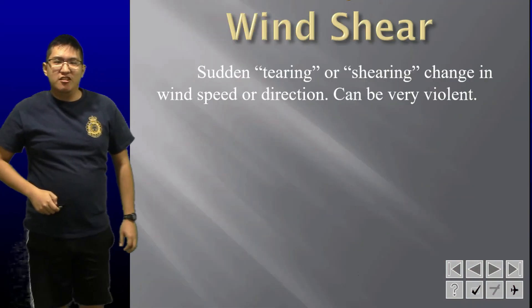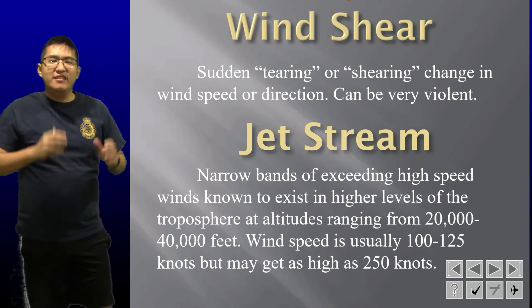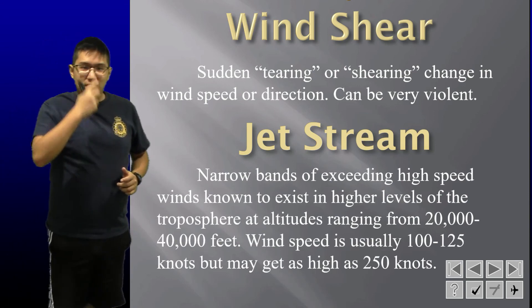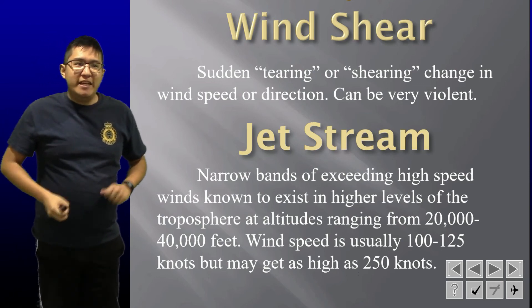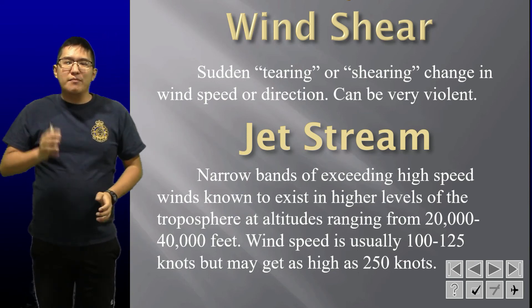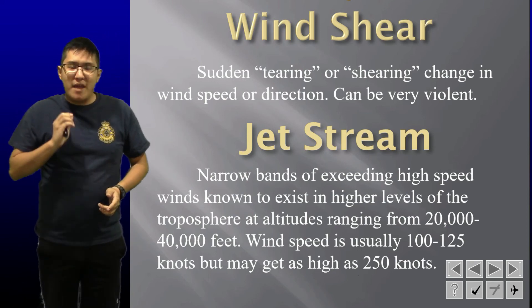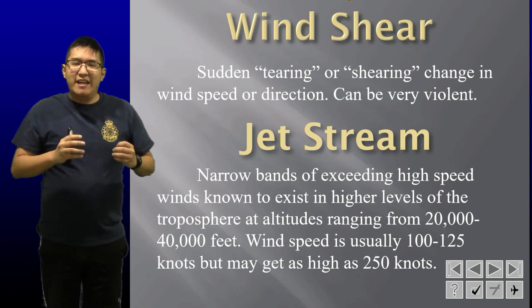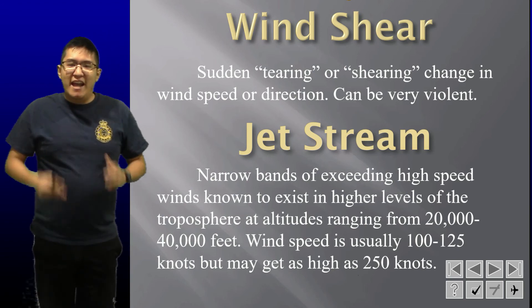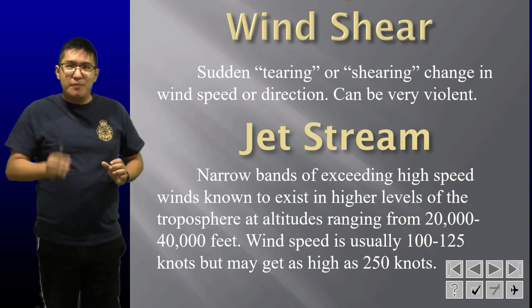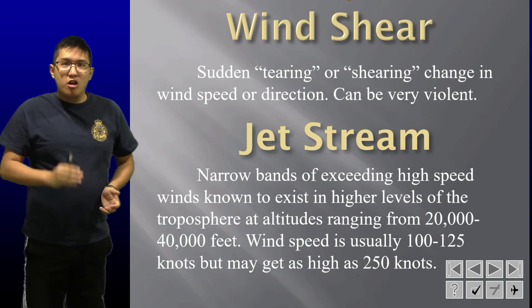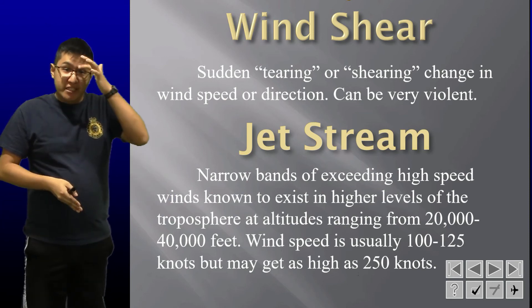Wind shear is a sudden, tearing change in wind direction or speed — this can be very violent. Think of it like a much more dramatic gust, one that really pushes you around and changes very dramatically. It can be very dangerous, especially when you're close to the ground, which is why you'll see it in weather reports or air traffic control will warn you of wind shear.